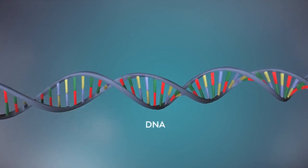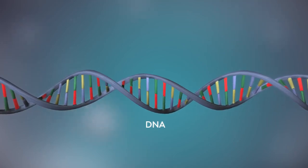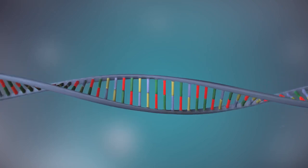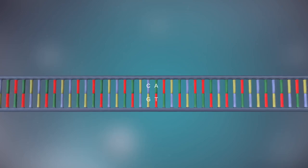DNA is a molecule made up of two strands twisted around each other in a double helix shape. Each strand is made up of a sequence of four chemical bases, represented by the letters A, C, G and T.